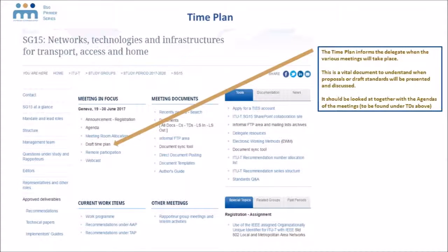Another very important document is the time plan. The time plan tells you when the various meetings will take place — question meetings, working party meetings, plenaries and so on. This is a very important document as it shows you when draft standards and proposals for standards are going to be under discussion. The time plan needs to be looked at together with the agendas of the meetings that are found in TDs, as mentioned earlier. This time plan will be regularly updated just before the meeting and also during the meeting with any last-minute changes.